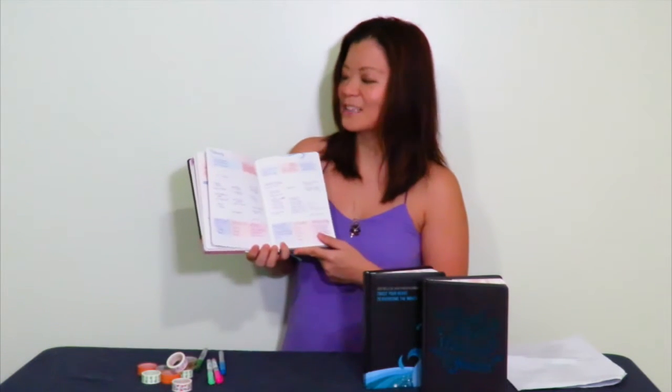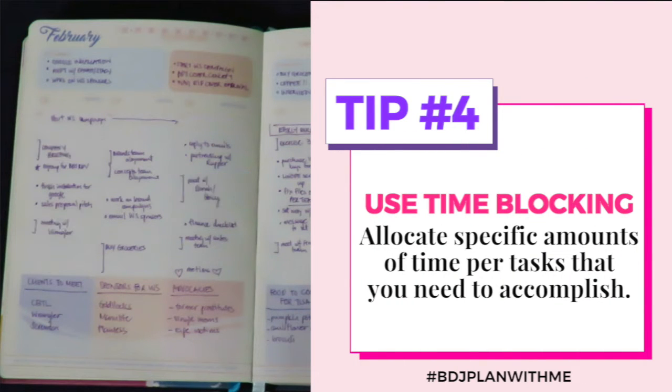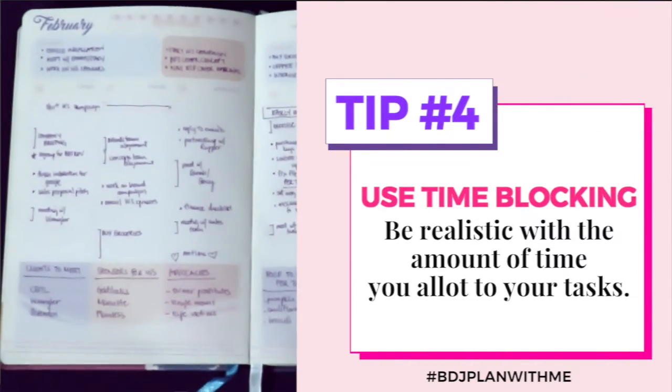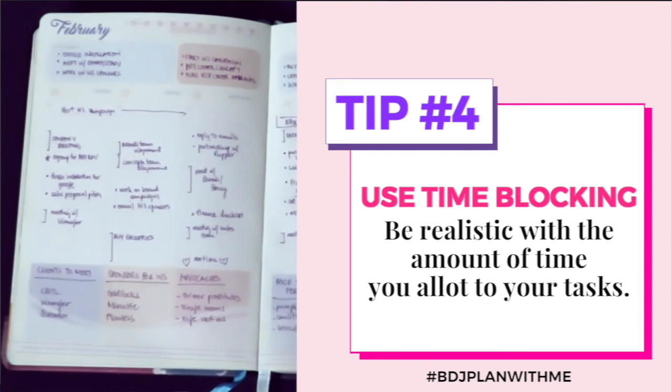For tip number four it's time blocking. Just like your closet where you can buy all the clothes you want, we have to look at time as a finite object — you only have 24 hours in a day, and you ideally want to sleep and you spend a lot of time in traffic, so you have to be realistic with the amount of time you have for certain tasks. You block off certain tasks — even if you're doing reports for the office, you block it off like maybe one hour for that report. When you do time blocking you become more realistic about how you're planning out your week or your day.